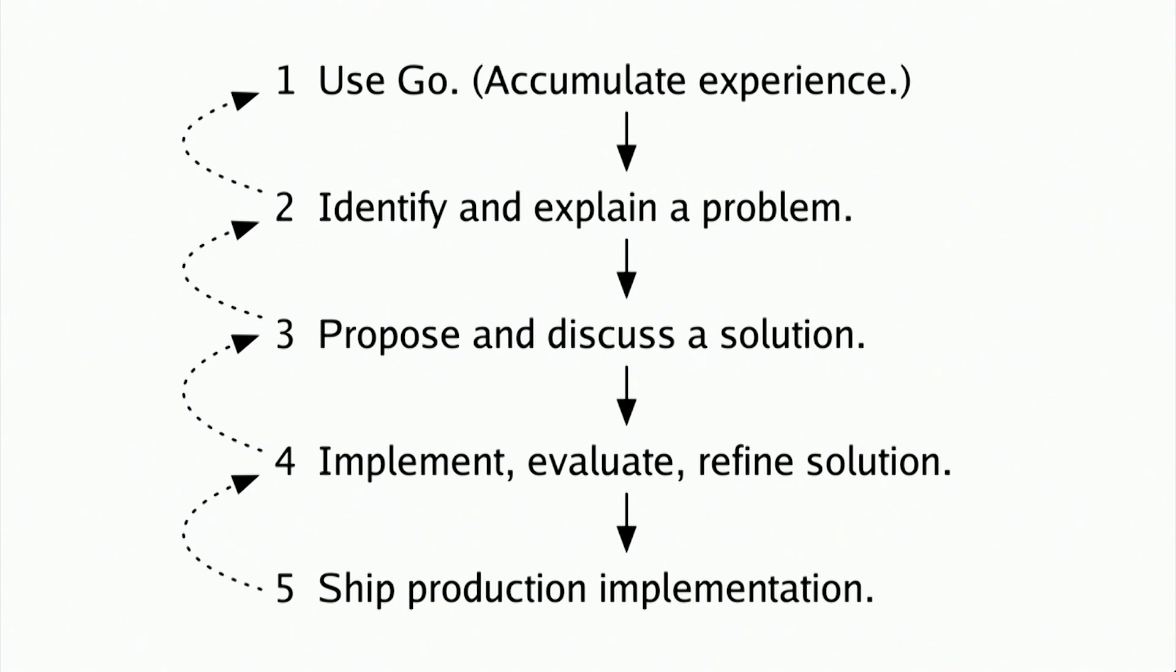The same person does not have to do all of these steps for a particular change. In fact, usually many developers collaborate on any given step, and many solutions may be proposed for a single problem. Also, at any point we may decide we don't want to go further with a particular idea and circle back to an earlier step. And although I don't believe we've ever talked about this process as a whole, we have explained parts of it. In 2012, when we released Go 1 and said it was now time to use Go and stop changing it, we were explaining step one. In 2015, when we introduced the Go change proposal process, we were explaining steps three, four, and five. But we've never explained step two in detail, so I'd like to do that today.